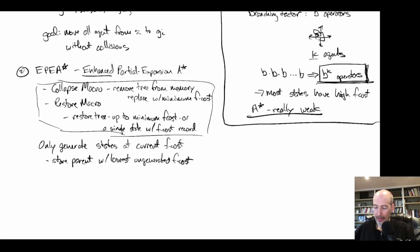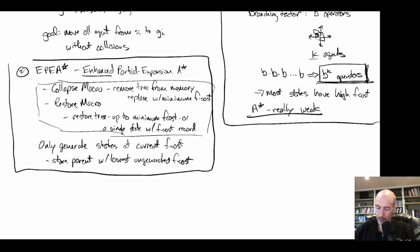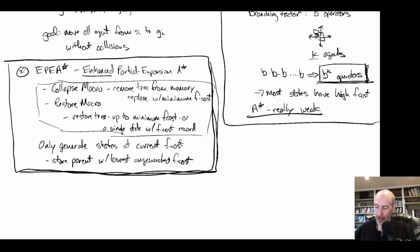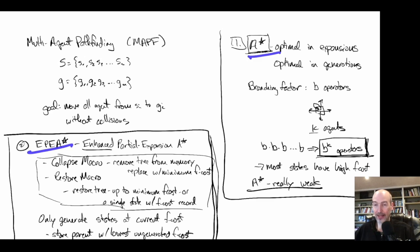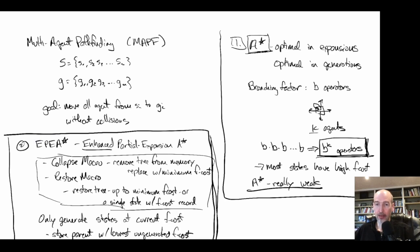EPEA* is better than A*, but it still operates in the joint space, which remains expensive. A* and EPEA* are presented as baseline algorithms. EPEA* may be useful as a backup solver for small instances, but in general these algorithms cannot handle everything we need.